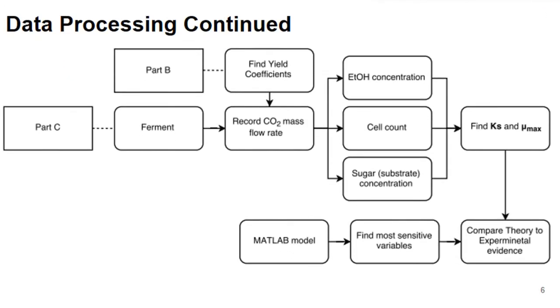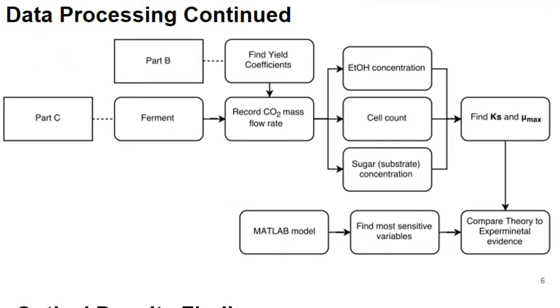To continue the data processing in part C of this experiment, we fermented another flask and recorded the carbon dioxide mass flow rate over time. From that value, using correlations found by Balling and others, we were able to figure out what the ethanol concentration was, the cell count, and the sugar concentration present during this period of time in which it was fermenting.